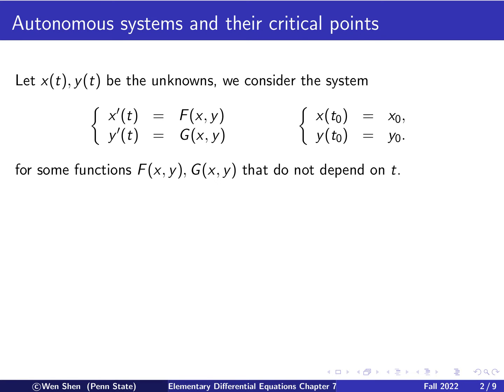We consider two-by-two systems, so we have two unknowns denoted by X(t) and Y(t), and we have the following system. These are functions of t, so the derivative of X is some function capital F depending on X and Y, and the derivative of Y is a function capital G depending on X and Y. The important feature of this system is that the right-hand side — these two functions — depend only on X and Y, and in particular do not depend on the time t.